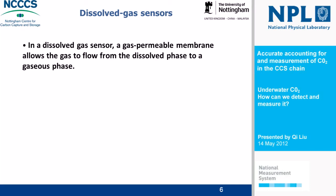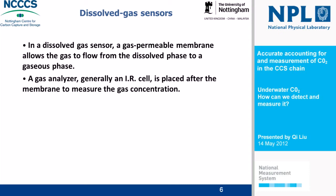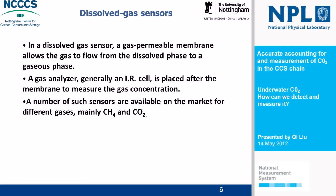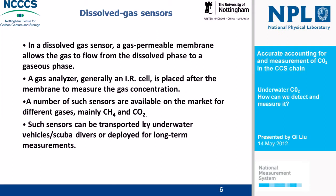Regarding the dissolved gas sensor, a gas-permeable membrane allows gas to flow from the dissolved phase to a gaseous phase. A gas analyzer is generally placed after the membrane to measure gas concentrations. Among such sensors available on the market, the main ones measure carbon dioxide and methane. Such sensors can be transported by underwater vehicles or SCUBA divers, and also used for long-term deployment.